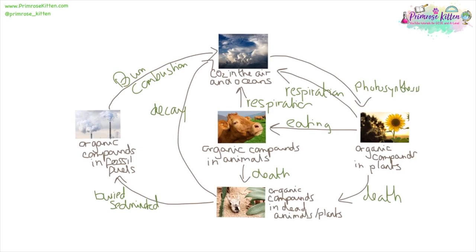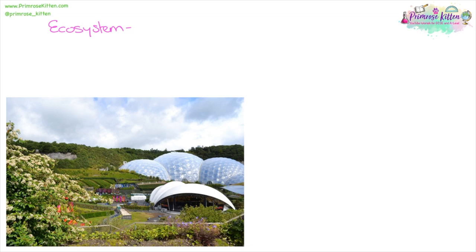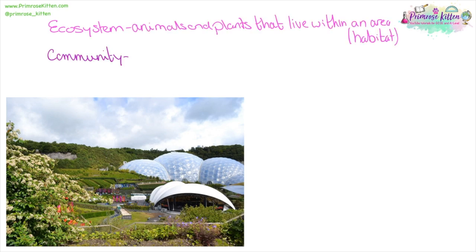Carbon isn't a static thing — it is constantly moving around. This is a very involved process that happens over millions of years and you need to know all of these steps. An ecosystem comprises the animals, plants, and everything living within a certain area — the community of plants and animals that live there. They are all dependent upon one another and cannot survive without each other. For example, animals eat the plants and can't survive without doing so, and plants rely on animals to distribute their seeds.